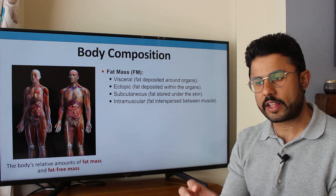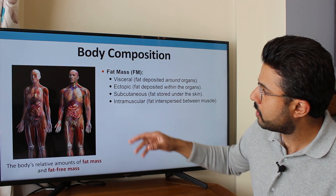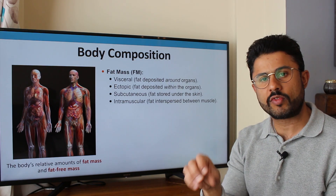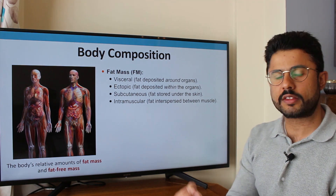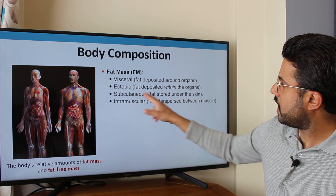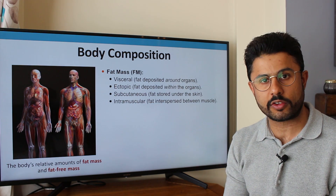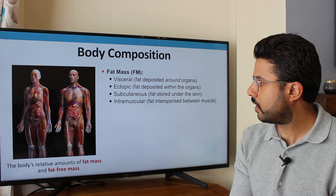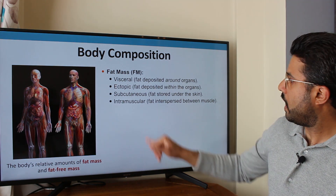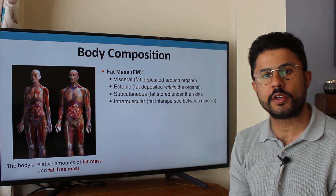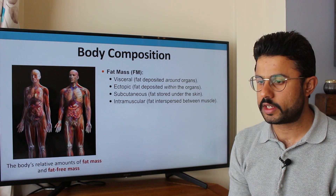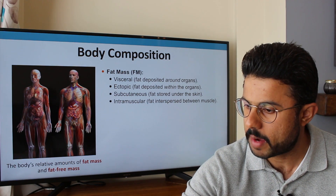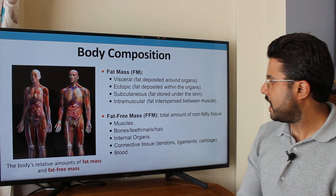Ectopic fat is fat contained within an organ itself — not around it — and can manifest in various pathological disorders. Subcutaneous fat is stored underneath our skin, providing an insulating layer to keep us warm throughout the body. Intramuscular fat is interspersed between the muscles and can be used to provide energy particularly during low intensity, long duration exercise. These are the various types of fat mass that make up our body.